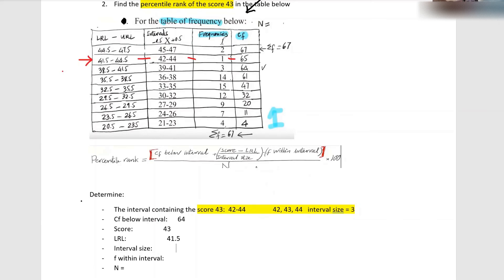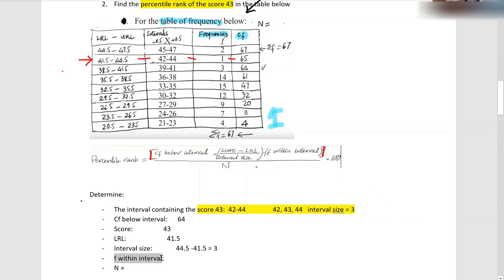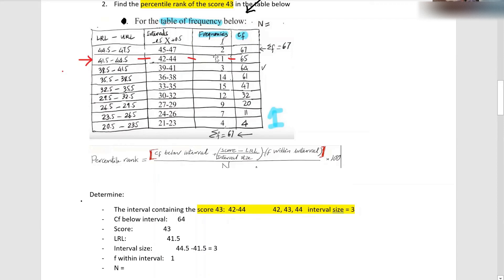The interval size is three. You can take the upper limit 44.5 minus the lower limit 41.5 and you get three — the same as before. Next, find the frequency within interval. Lathe, what is it? One. If you look at the frequencies column within the interval, the answer is one.